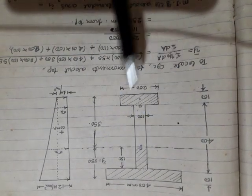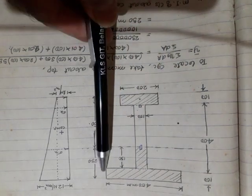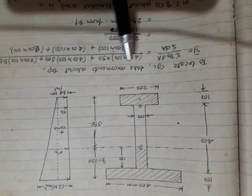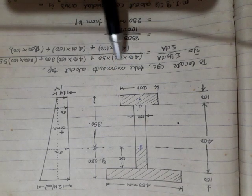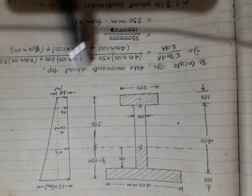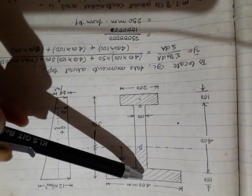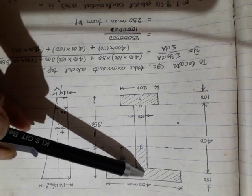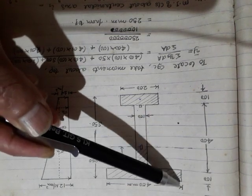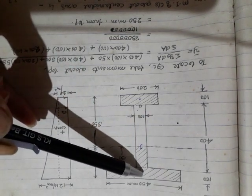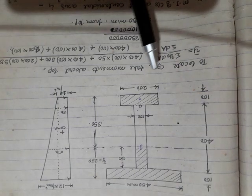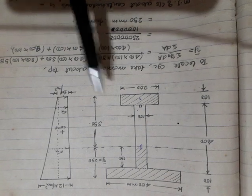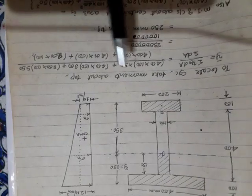Starting with the top flange: the area is 400 mm × 100 mm, and its centroid lies at 50 mm from the top — so the lever arm (yg) is 50 mm. Therefore, the contribution is area × lever arm for the top flange.